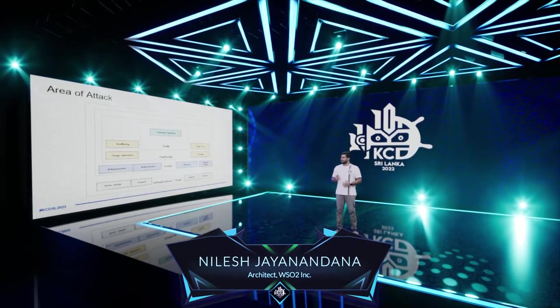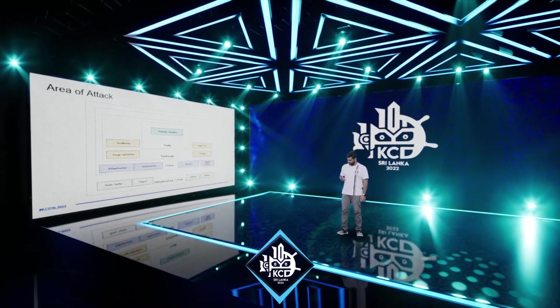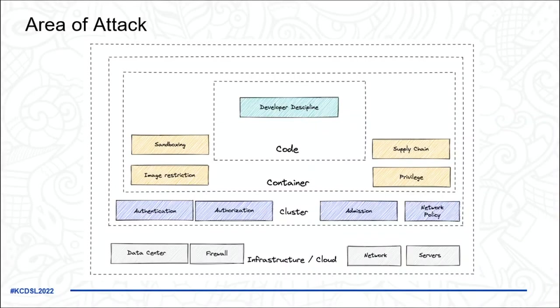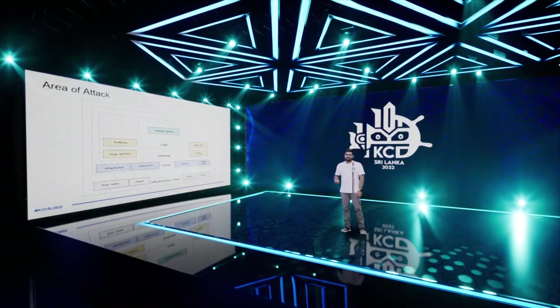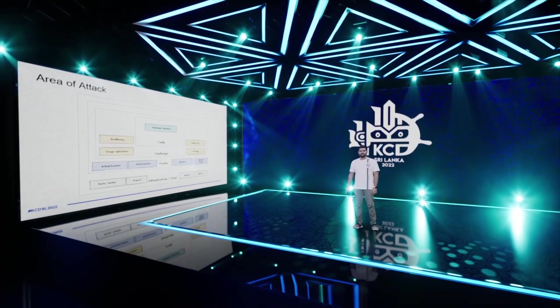The first slide introduces the attack surface of a Kubernetes cluster. At the bottom we have infrastructure — data centers, firewalls, network, and servers. The next layer is the cluster with RBAC, authentication, authorization, and admission control. Above that we have containers with sandboxing, image restriction, privilege escalation, and supply chain. Finally, the top layer is developer discipline — the code base.